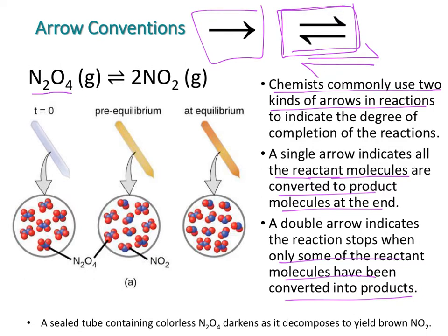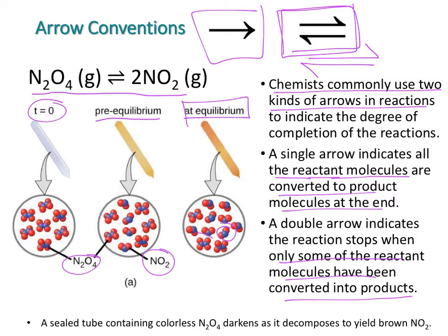Here we have an example: N2O4 being converted into NO2 gas. At time zero, before the reaction starts, there is only N2O4. As the reaction proceeds but before equilibrium, conversion begins. At equilibrium, you have a certain amount of NO2 and still some N2O4 present — so both reactants and products are present for any reaction with a double arrow.